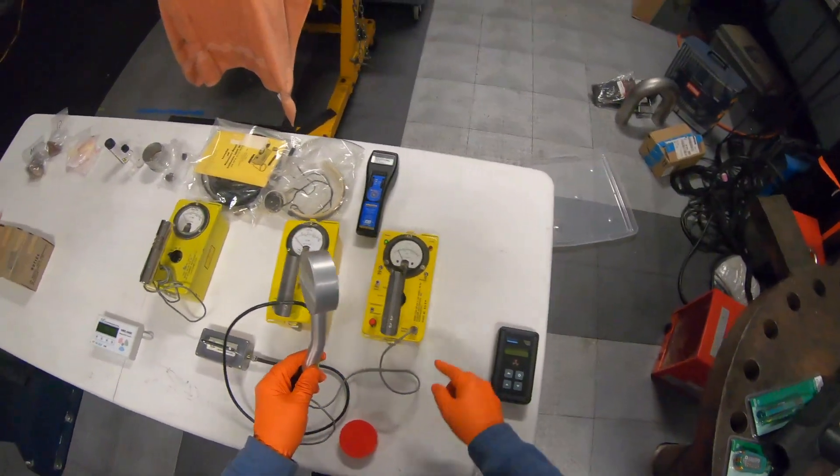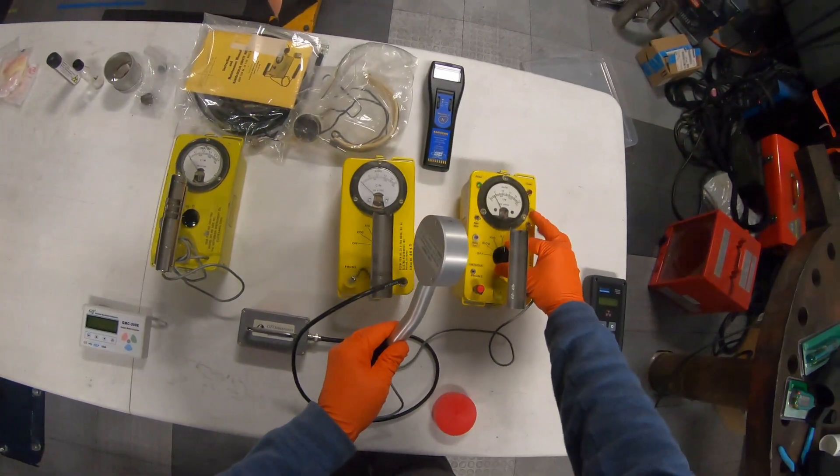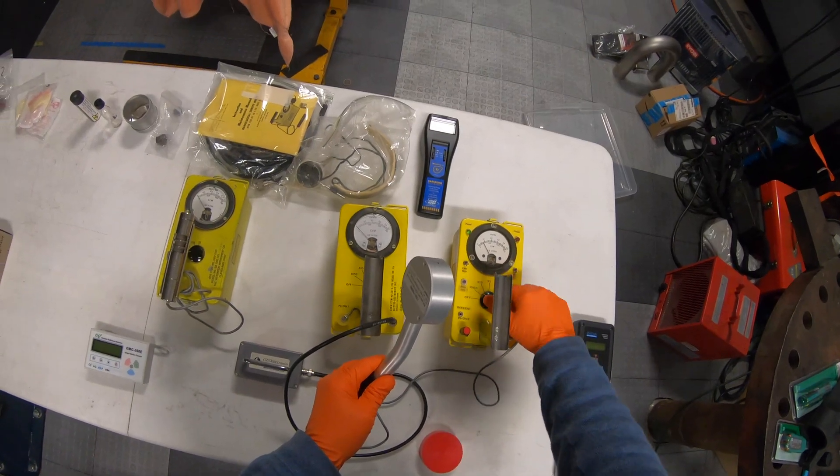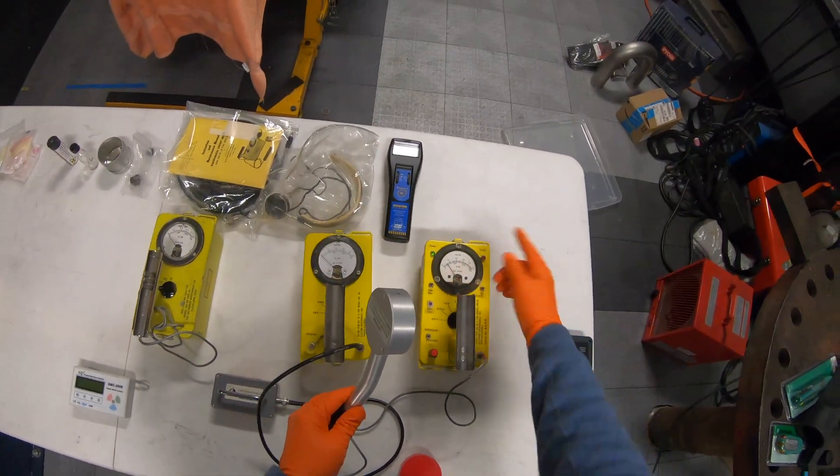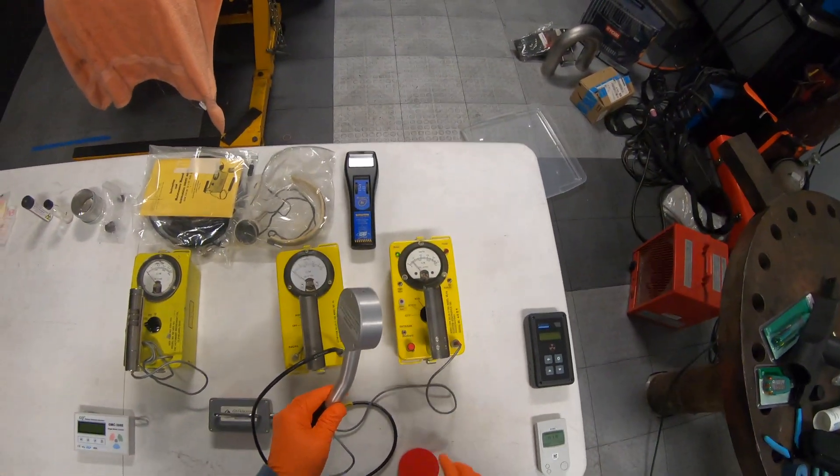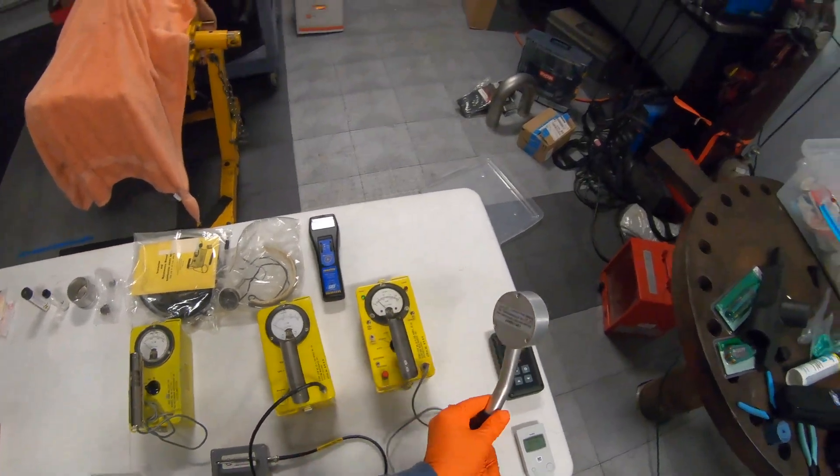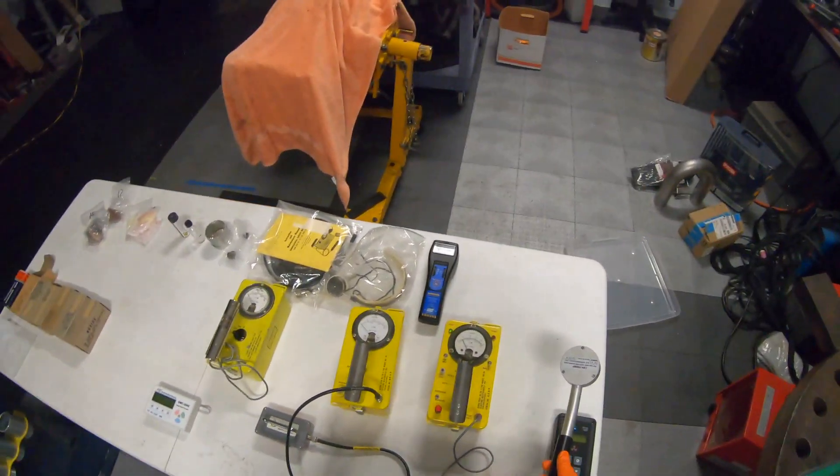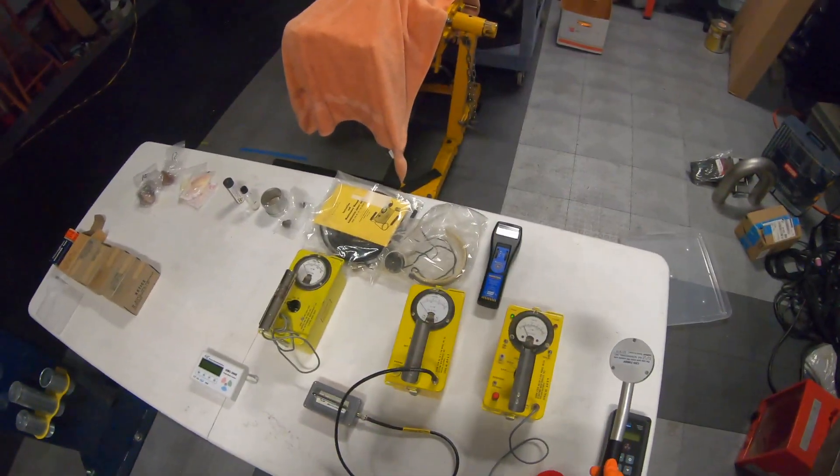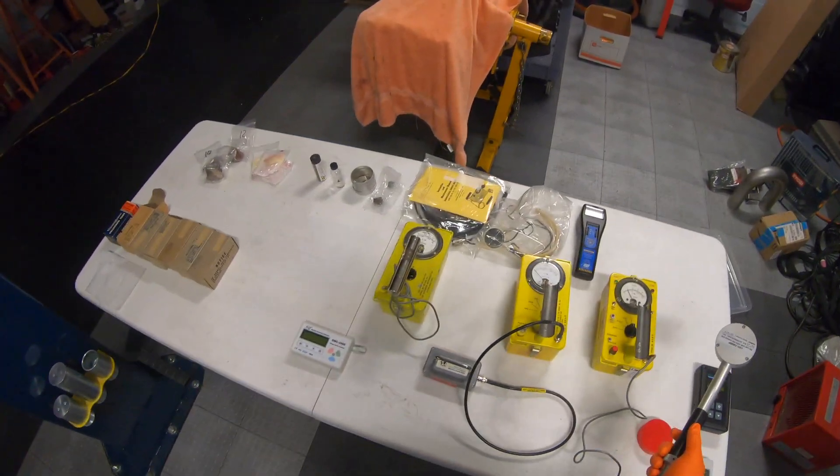So I'll walk through a couple of samples. This has a knob on it for changing scale times 1 times 10 times 100. And so you can see we're somewhere in the 40 to 50 counts per minute right now, which is a little above what it would normally be. But that's just because of the stuff sitting here. So I'll walk through a couple of different samples.